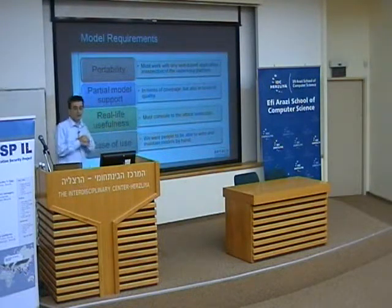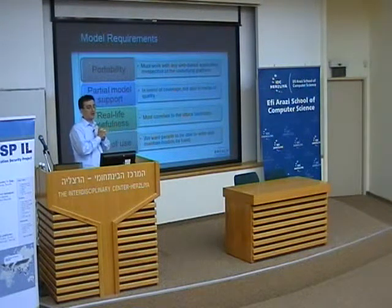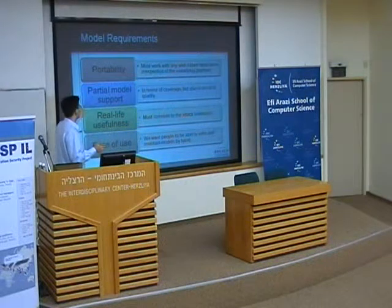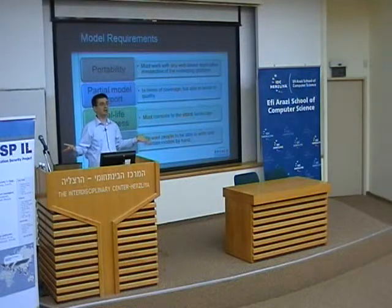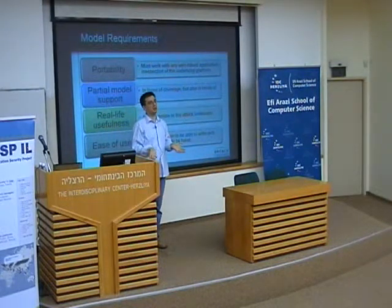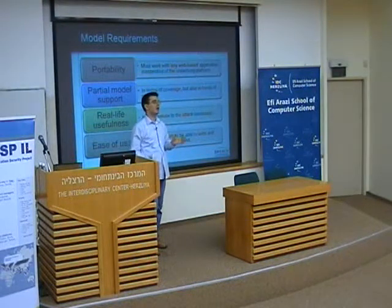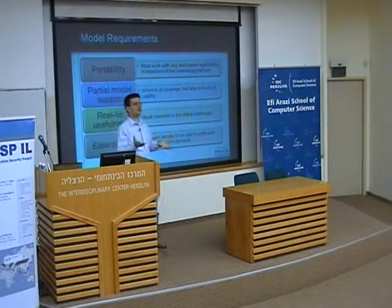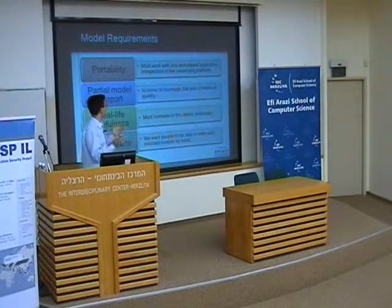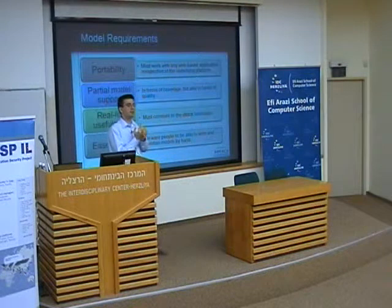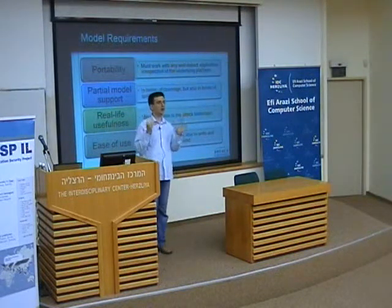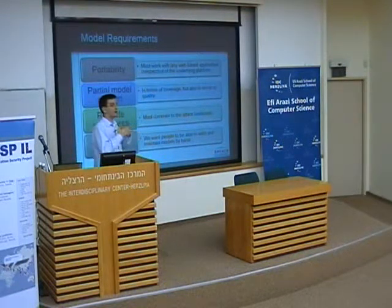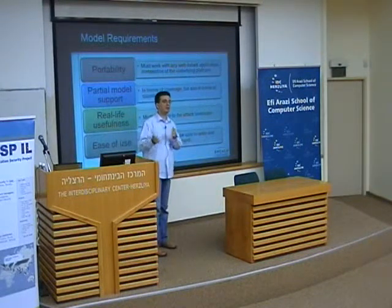To address portability, we want to protect any web application out there. Partial model support means accepting that our models are never going to be perfect — you're always going to have some parts of your application that are difficult to cover. The parts that are often used you will be able to protect very well, but there will always be a few pages where you have a very small sample of information. That's why we introduced a parameter called Confidence — for any particular information, we have a Confidence score saying how good this model is. We propagate this parameter and make it available to the user so they can make decisions. If Confidence is 100%, they can choose to block.